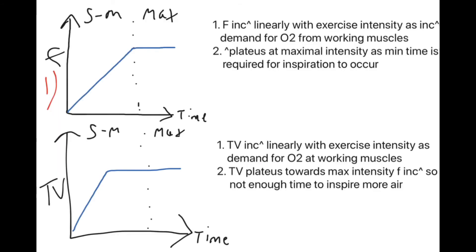Next, we need to know how to draw and annotate these key graphs. The first graph shows breathing frequency against time. Breathing frequency increases linearly with exercise intensity as the demand for oxygen from the working muscles increases. It then plateaus during maximal intensity exercise because there is a minimum time required for inspiration to occur, so it cannot keep increasing.